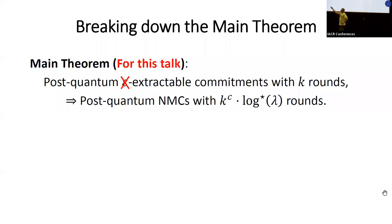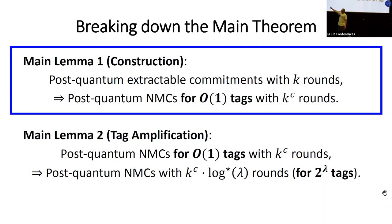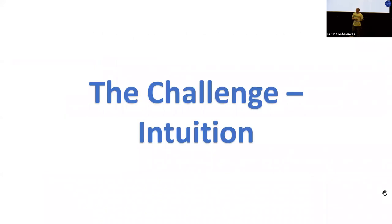Let's concentrate on the main technical lemma. We can set aside epsilon-extractable commitments and state a slightly weaker version which suffices for today. This is proven by two lemmas. The first is the construction: given a post-quantum extractable commitment with k rounds, we can construct post-quantum non-malleable commitments for a constant number of tags in k^c rounds. The second is tag amplification: since a tag can be any lambda-bit string, we need exponentially many tags, so this lemma amplifies the number of tags with a small round overhead. Today we focus on the main construction lemma.